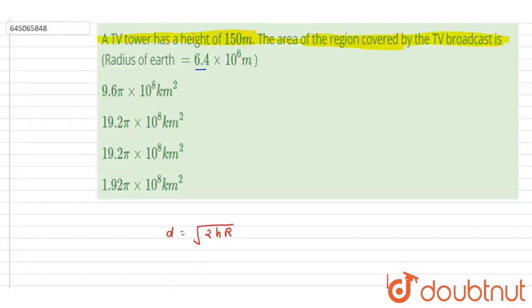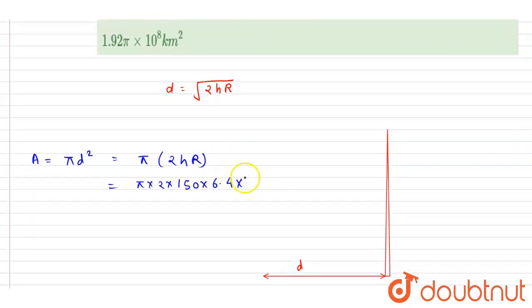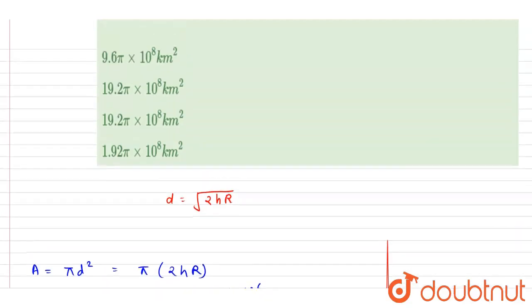So if you multiply this, if you see this is 10⁶ and π, and if you multiply 2×150, it will be 300. 300×6.4 = π×10⁶. Now 6.4×300 is 1920π×10⁶ meter, right?